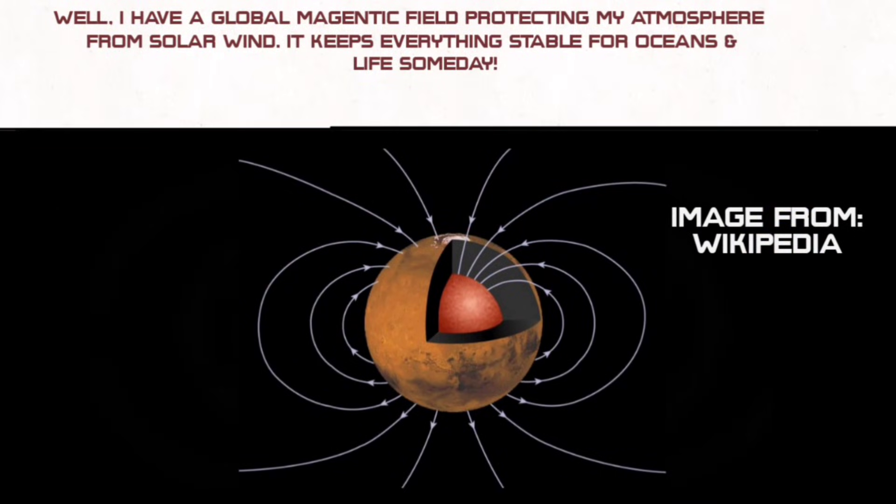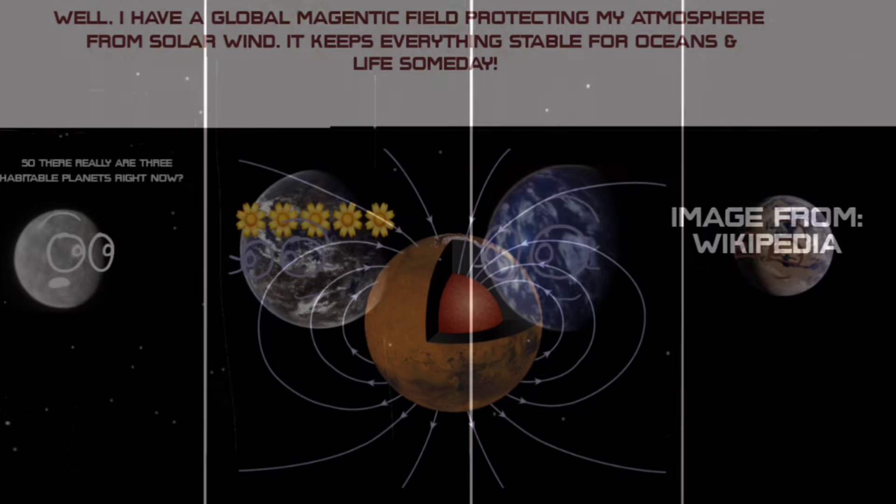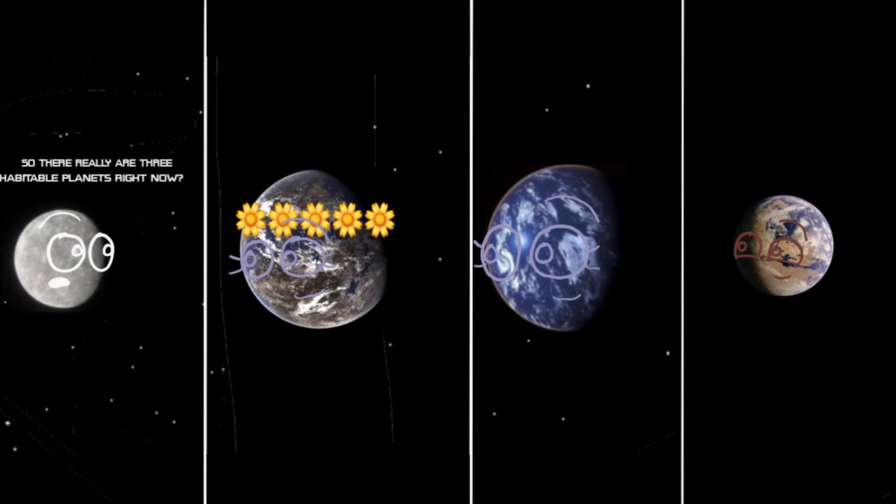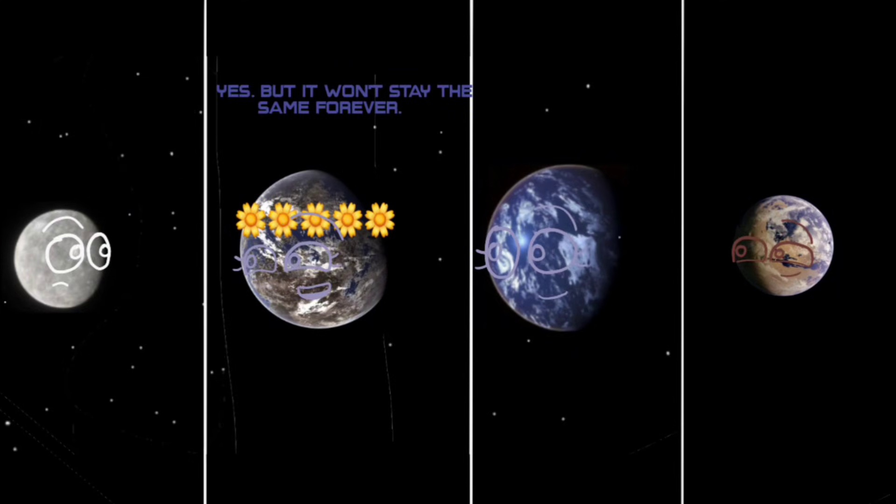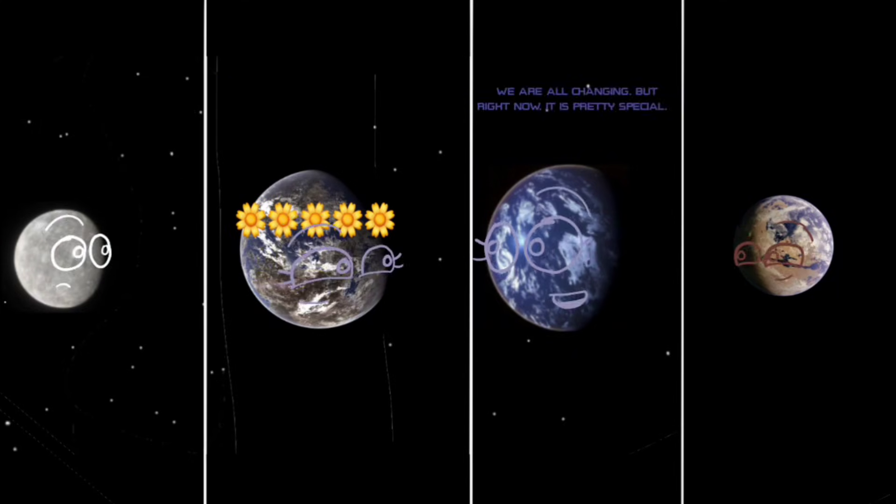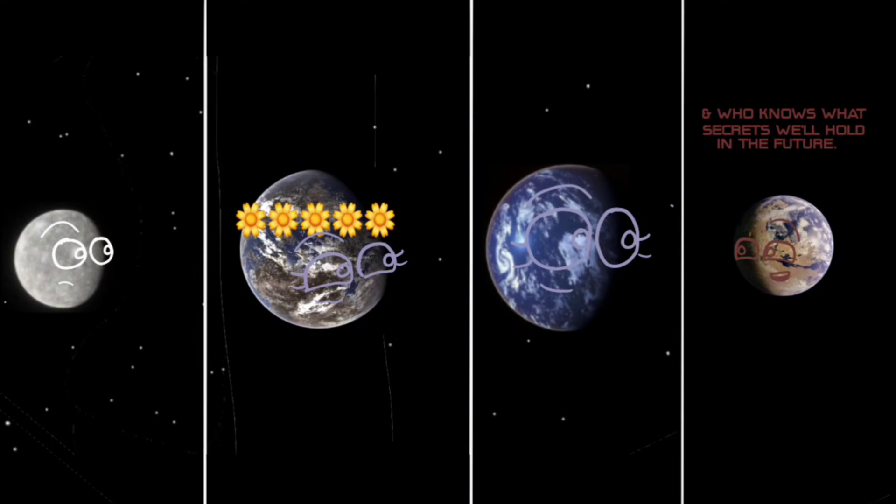It keeps everything stable for oceans and maybe life someday. So there really are three habitable planets right now? Yes, but it won't stay the same forever. We are all changing, but right now it is pretty special, and who knows what secrets we will hold in the future.